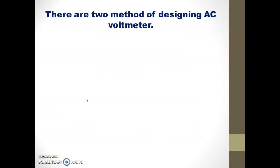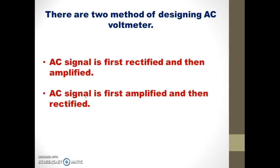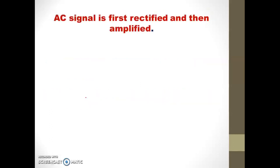There are two methods of designing an AC voltmeter. First, the AC signal is first rectified and then amplified. Second, the AC signal is first amplified and then rectified. Let us start with the first method: AC signal is first rectified and then amplified.